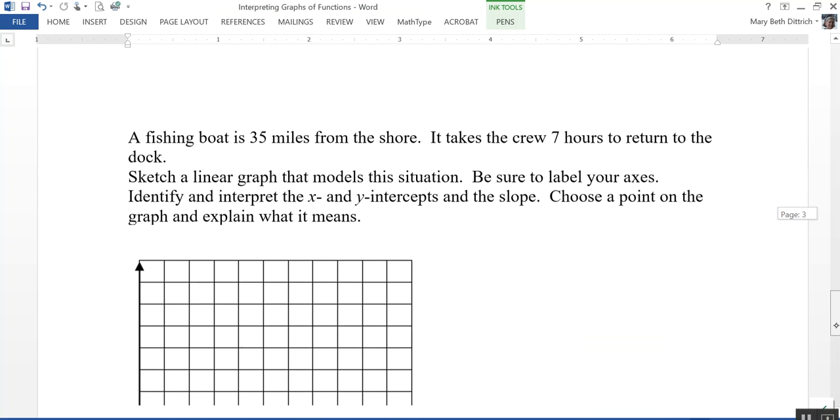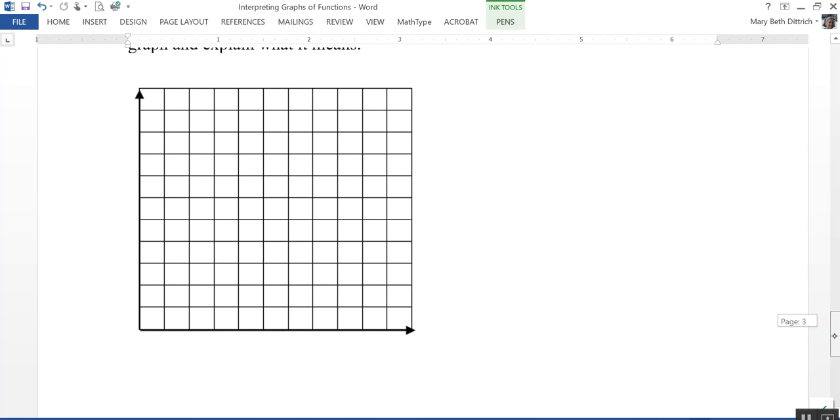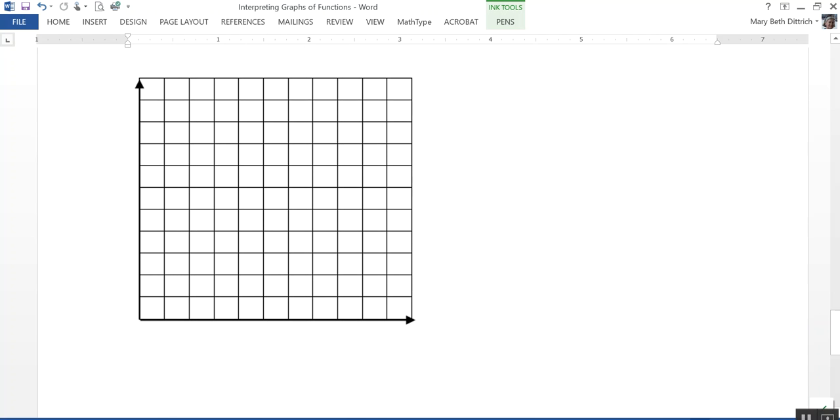And let's do one here together where we actually have to graph it. A fishing boat is 35 miles from the shore, and it takes the crew 7 hours to return back to the shore, back to the dock. We need to sketch a linear graph that models this situation. We want to make sure that we're labeling our axes. And then we're going to identify the x and y-intercepts, interpret what they mean, identify the slope, and interpret that, choose a point on the graph, and explain what it means. That's a lot of information. So we have a fishing boat that's 35 miles from the shore, and it takes it 7 hours to come back.